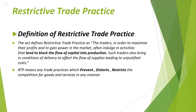If a trade practice distorts competition, it will come under restrictive trade practice. The definition states: it often includes activities that tend to block the flow of capital into production. Such traders also bring in conditions of delivery to affect the flow of supply, leading to unsatisfied costs. RTP — restrictive trade practice — means any trade practice which prevents, distorts, or restricts the competition for goods and services in any manner. These three words are very important: prevent, distort, or restrict goods and services — it will come under RTP, that is, restrictive trade practice.